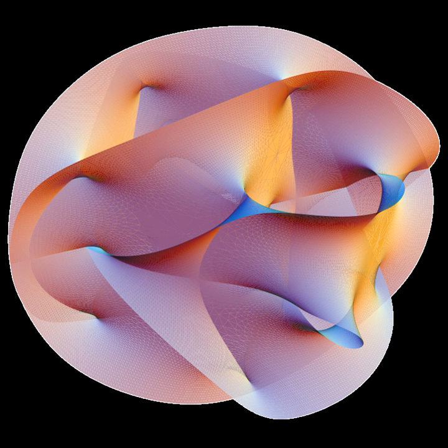A string theory which is formulated in the critical dimension is called a critical string. The non-critical string is not formulated with the critical dimension, but nonetheless has vanishing Weyl anomaly.